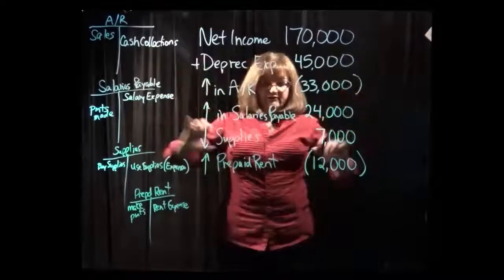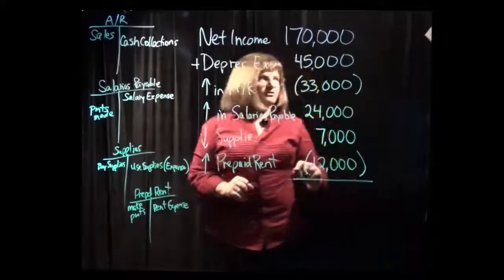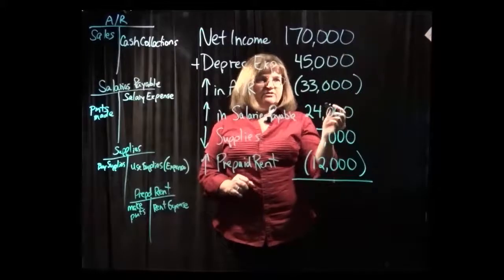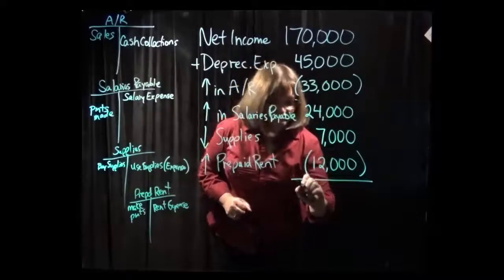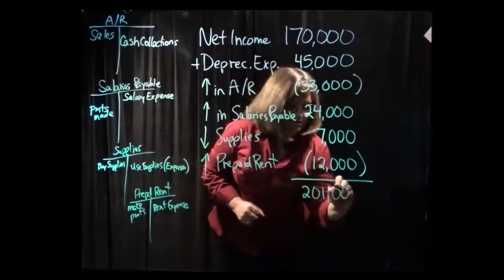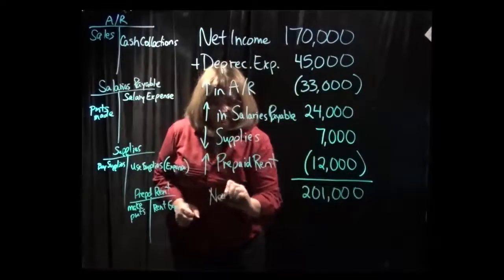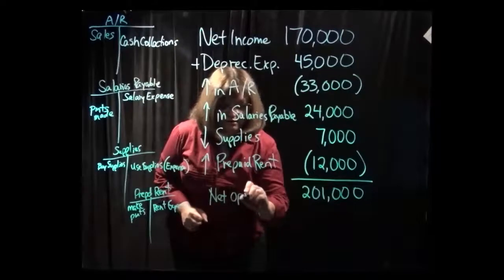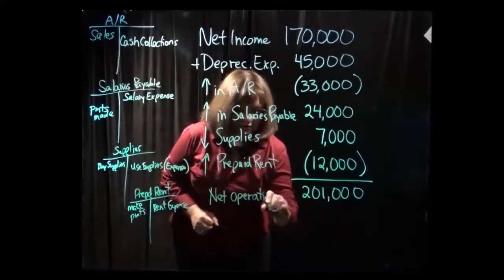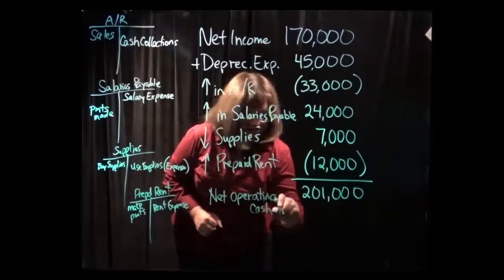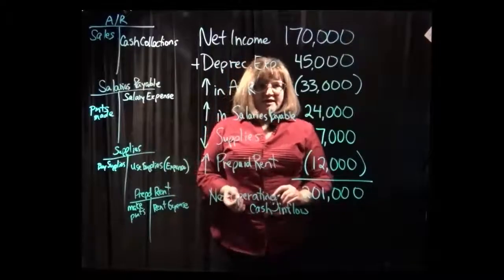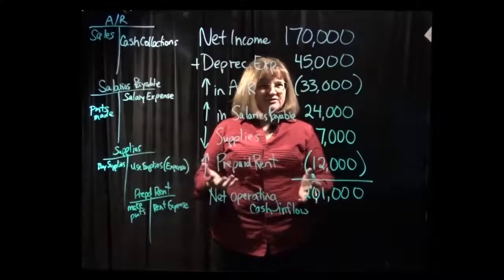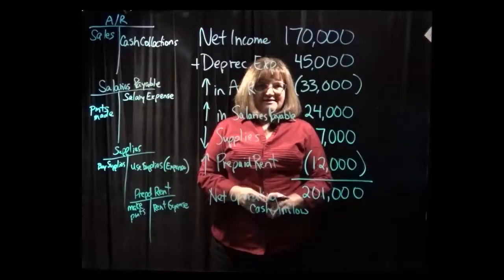That's using all the information that was given. Now we simply net these all together. Adding $170,000 plus $45,000 gives us $215,000. Then minus $33,000, plus $24,000, plus $7,000, minus $12,000 gives us $201,000. And that is what we will label as our net operating cash inflow, or the net cash inflow from operating activities or from operations. Thank you for viewing this demonstration, and I hope you found it helpful.